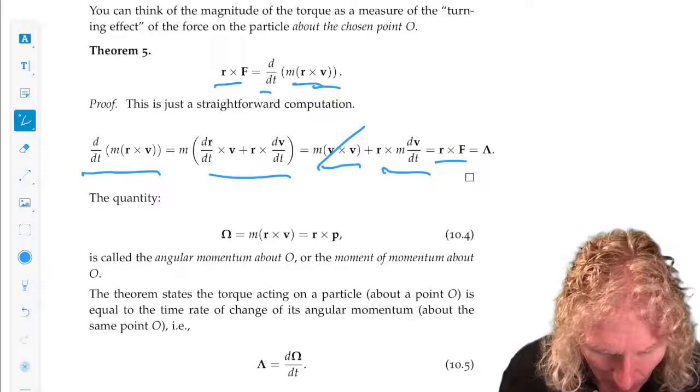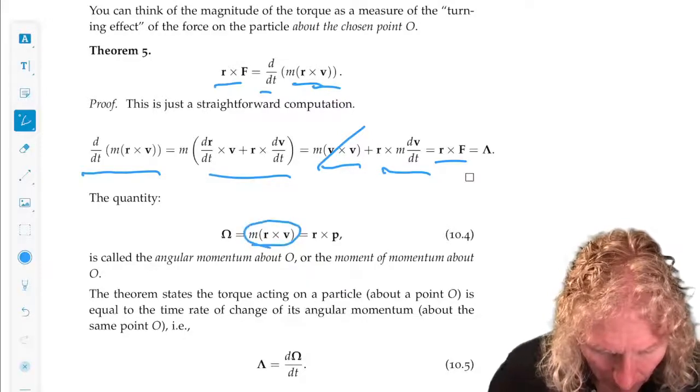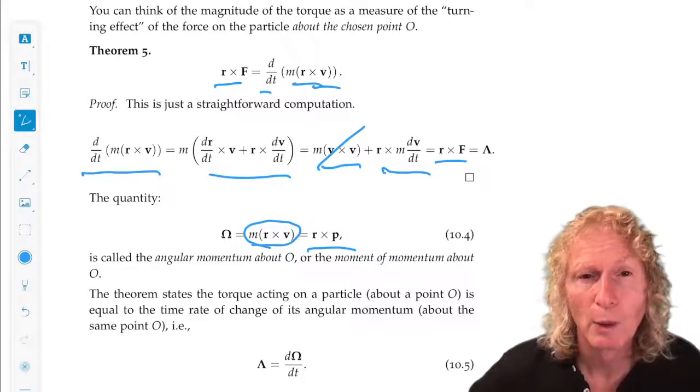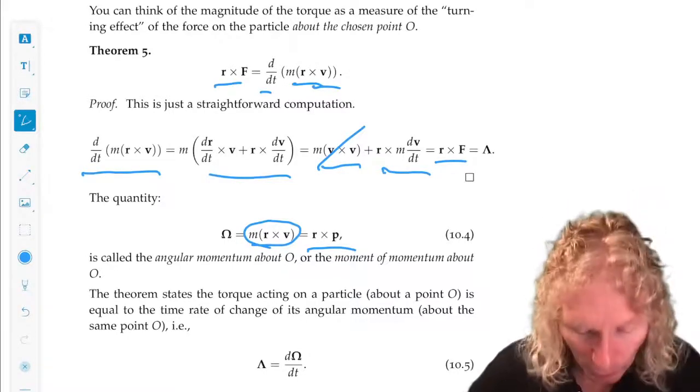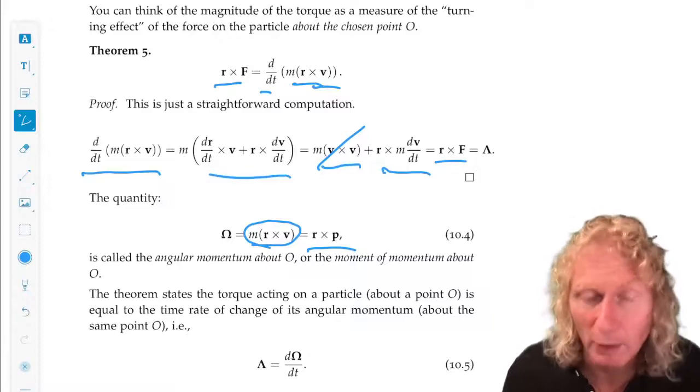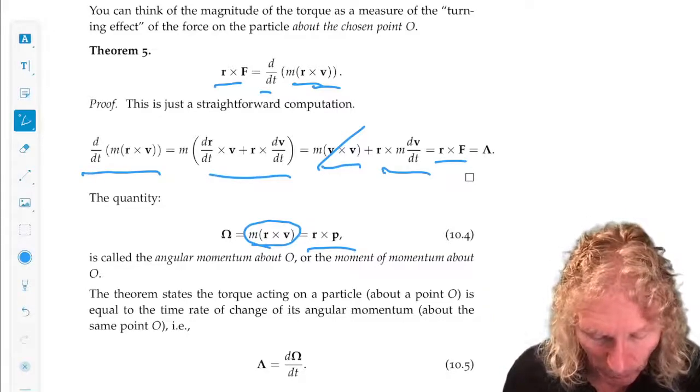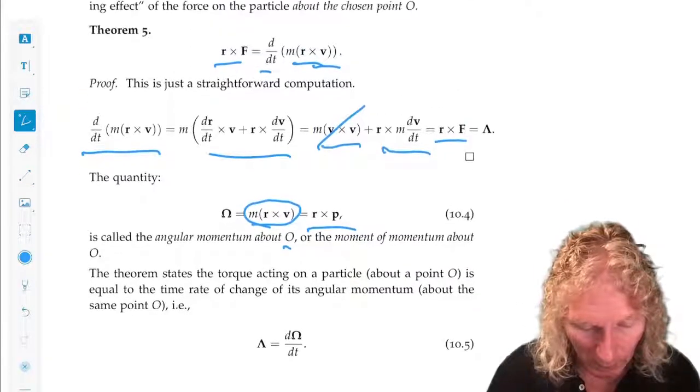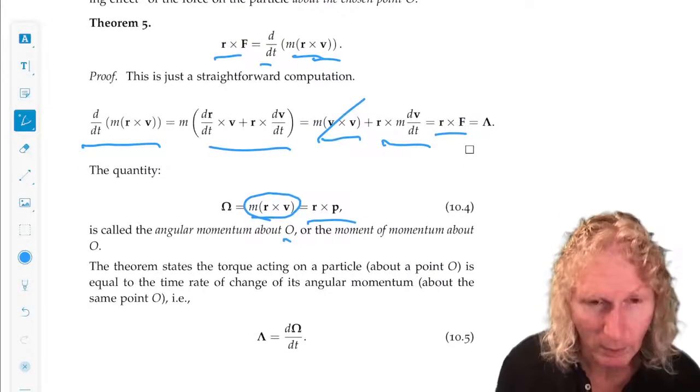Now this quantity M R cross V, which is R cross P, M is constant, we refer to this as the angular momentum about O for this particle of constant mass M.